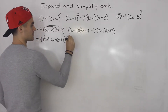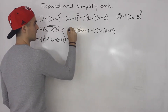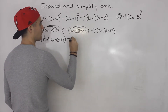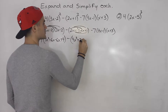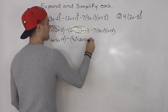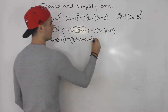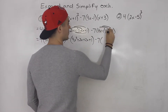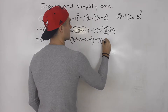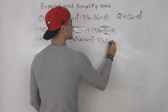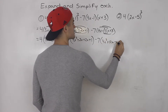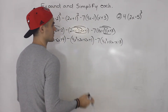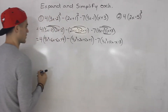Then over here, after we FOIL this out we would have 4x squared plus 2x plus 2x plus 1. And then over here after we FOIL it out we would have 4x squared plus 12x minus x minus 3, keeping that expression in brackets and the minus 7 outside of the brackets.